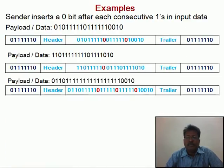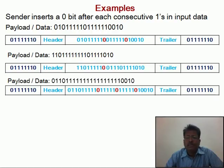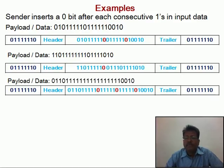The sender inserts a 0 bit after 5 consecutive ones in the input data. In the first example, there are 2 streams of ones having more than 5 consecutive ones, and hence a 0 bit is stuffed 2 times in the payload. For the second example, there are 8 consecutive ones, and therefore after 5 consecutive ones a 0 bit is stuffed. In the third example, there are 16 consecutive ones, and therefore 3 zeros are stuffed after each sequence of 5 consecutive ones.